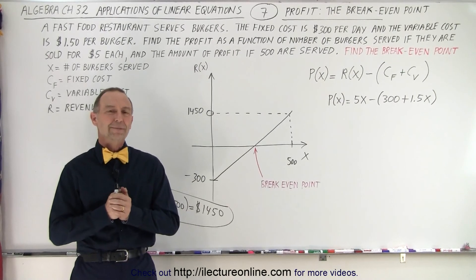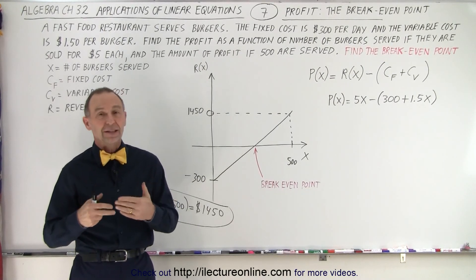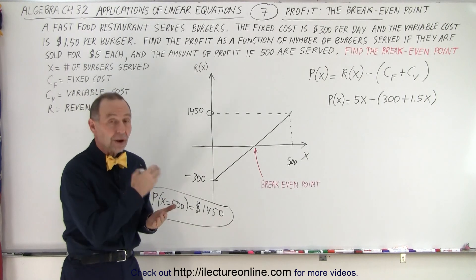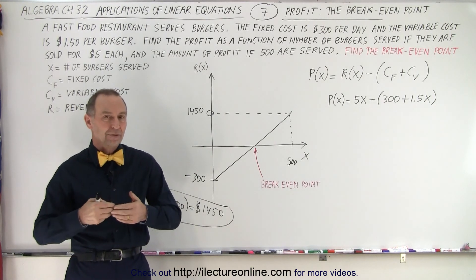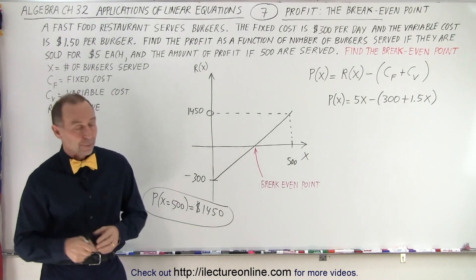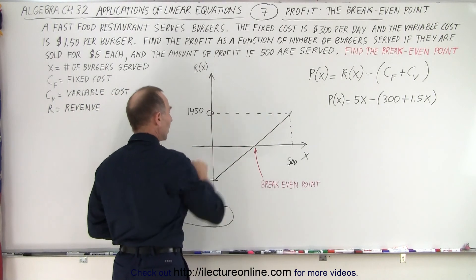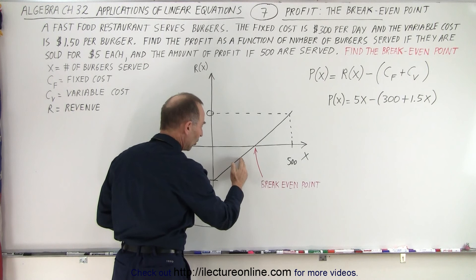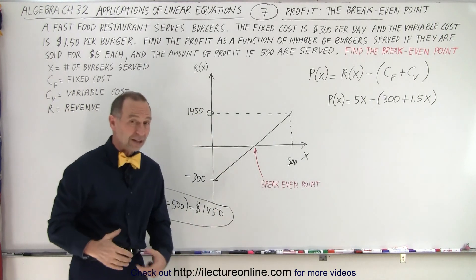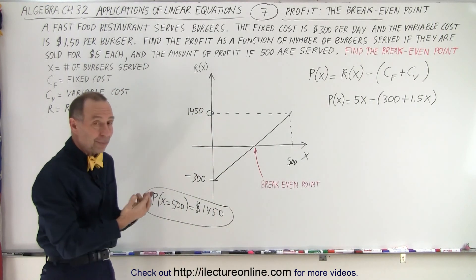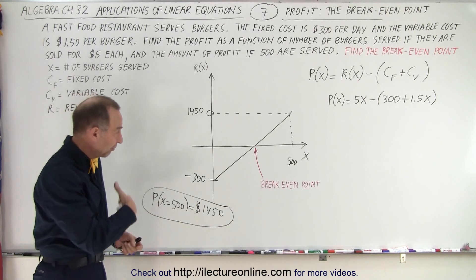Welcome to our lecture online. In the previous video we found an equation that represents the profit we can make when we have a hamburger stand where we sell hamburgers, and we can see that if we sell enough hamburgers we actually make a profit. But if we don't sell enough hamburgers we don't make a profit. We actually lose money because we have to pay that fixed cost plus the variable cost.